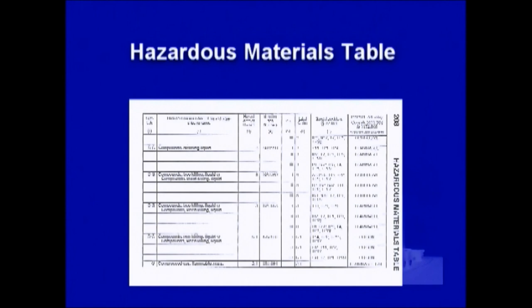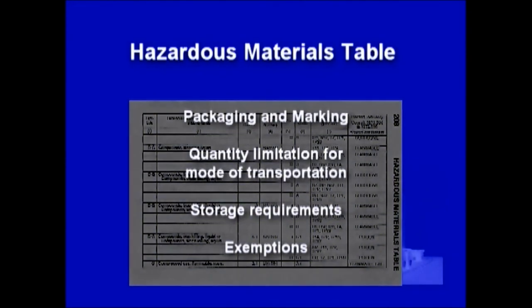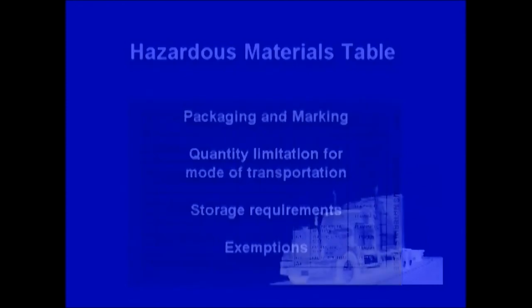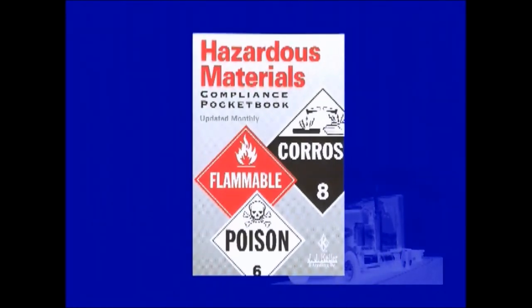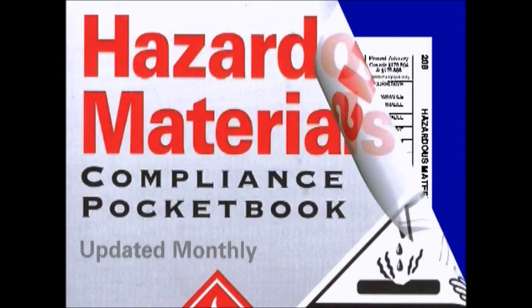Now that we have an understanding of the hazardous materials classes, let's talk about the hazardous materials table. The table is designed to supply you with all the basic information you need to know for packaging and marking, quantity limitation for mode of transportation, storage requirements, and exemptions. The hazardous materials table we are referencing is found in your hazardous materials compliance guidebook, which is the trucking industry's primary source of information for hazardous materials compliance. There are seven columns, and for easy reference, materials are listed alphabetically by proper shipping name.